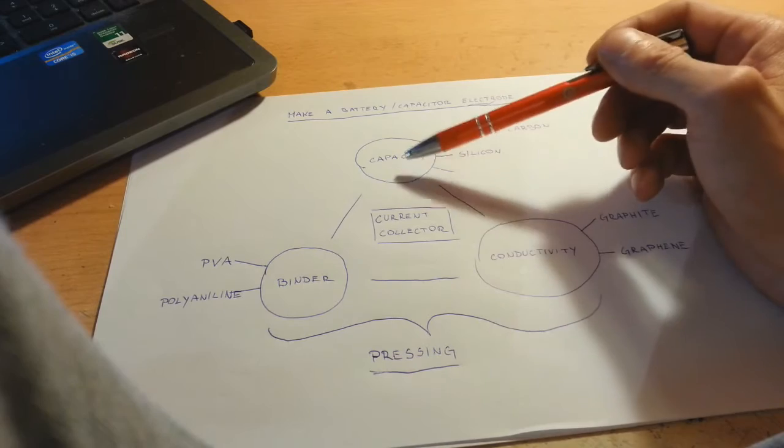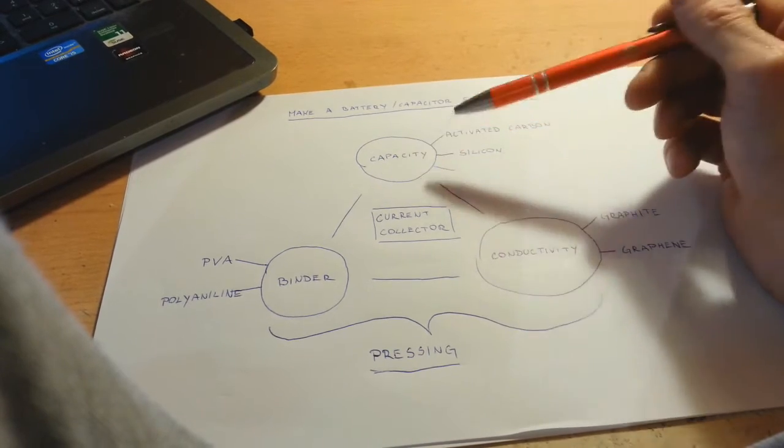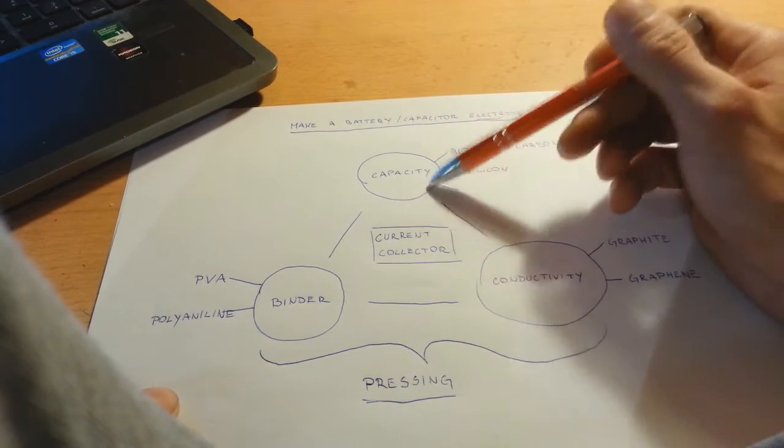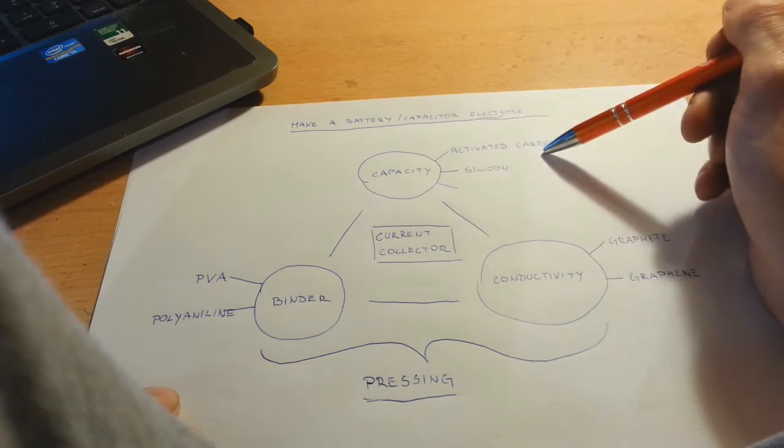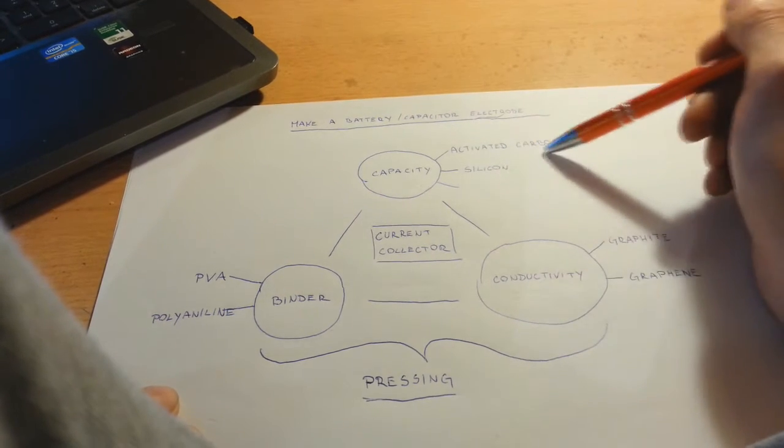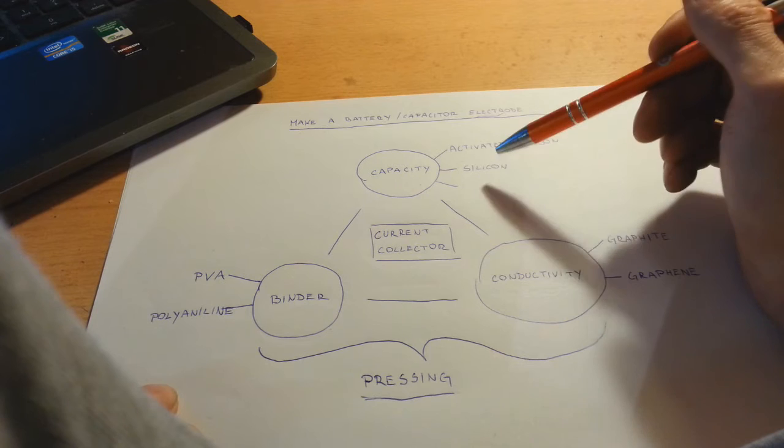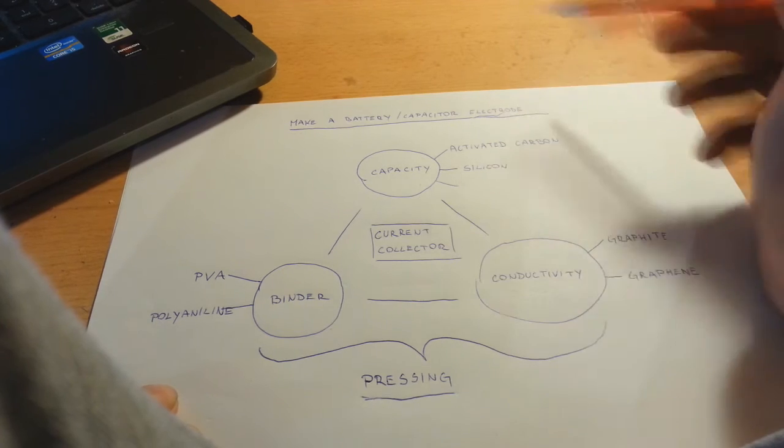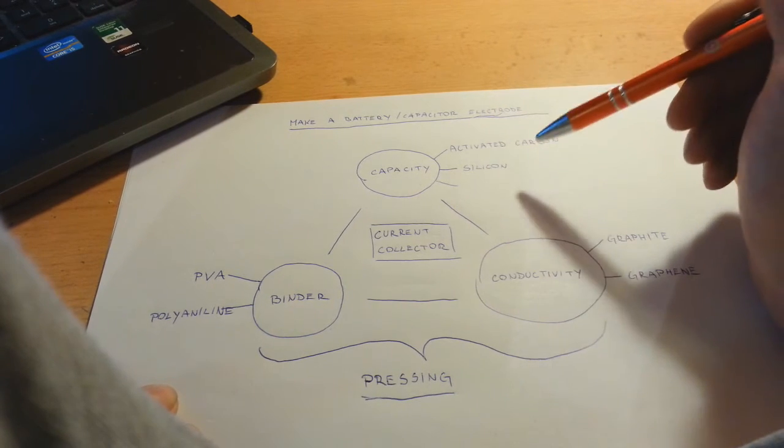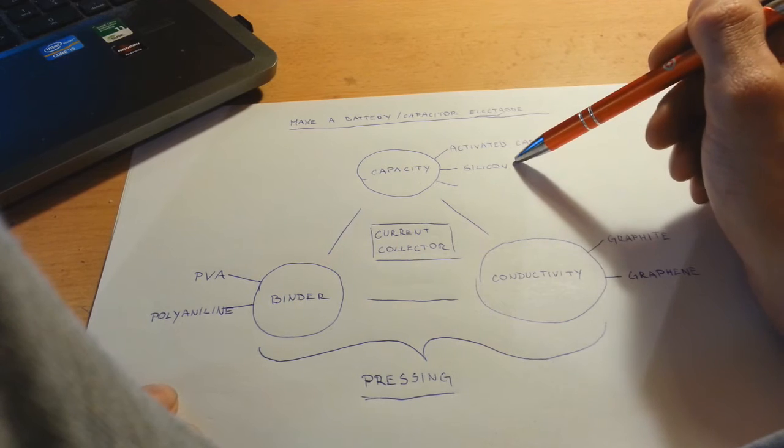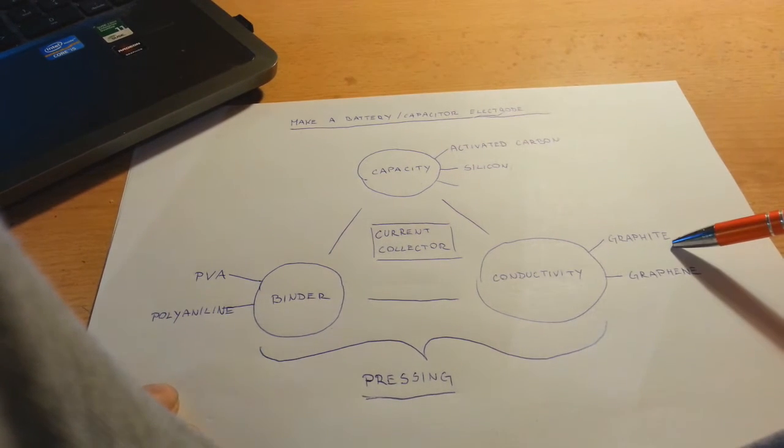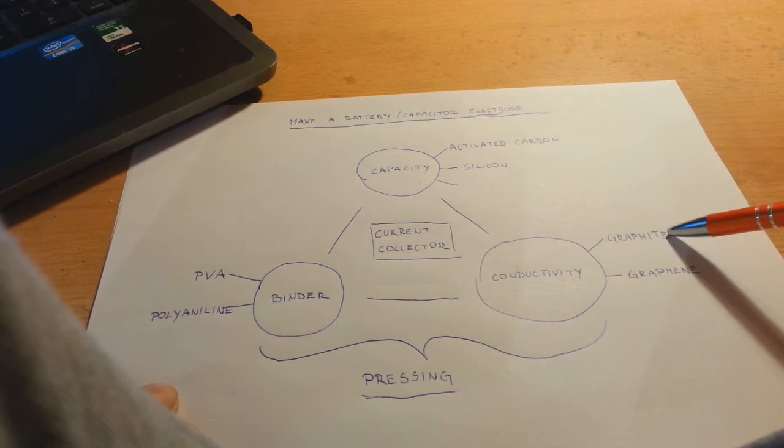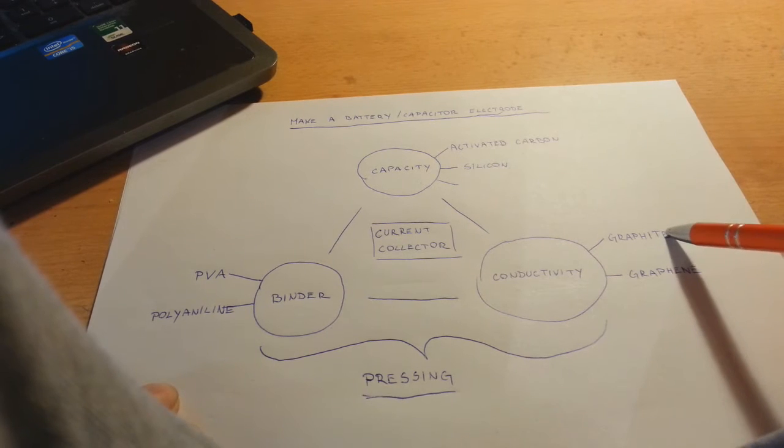The material for capacity is material which have large surface area like activated carbon or silicon. Silicon has the capacity of around three thousand milliamps hour per gram. Graphite in this case has the capacity of around three hundred milliamps hour per gram.